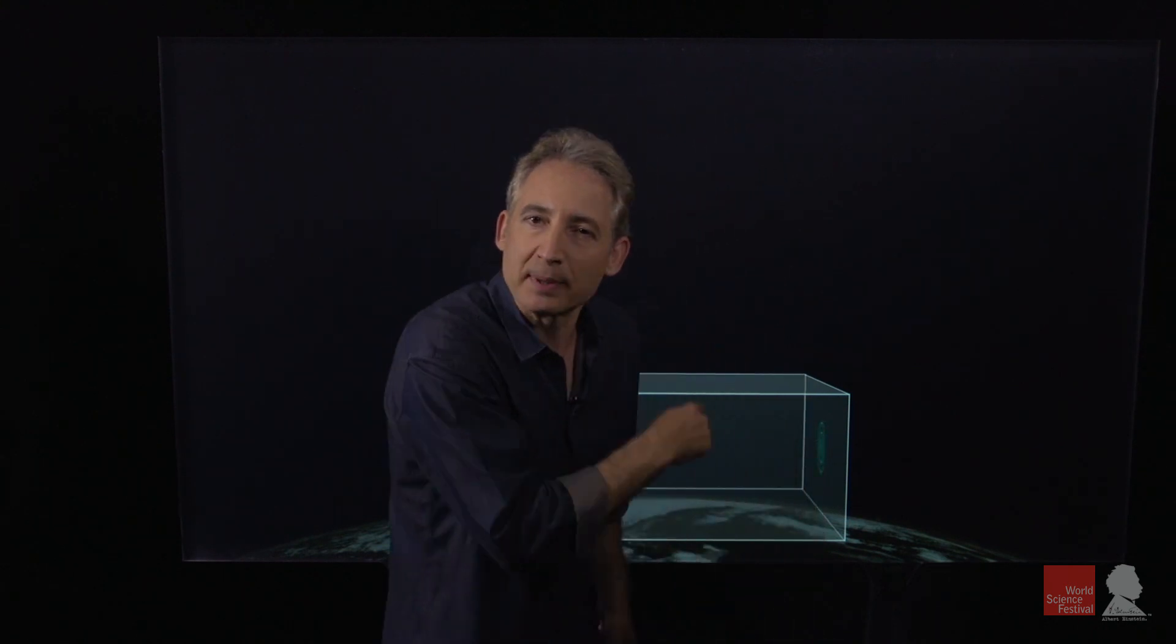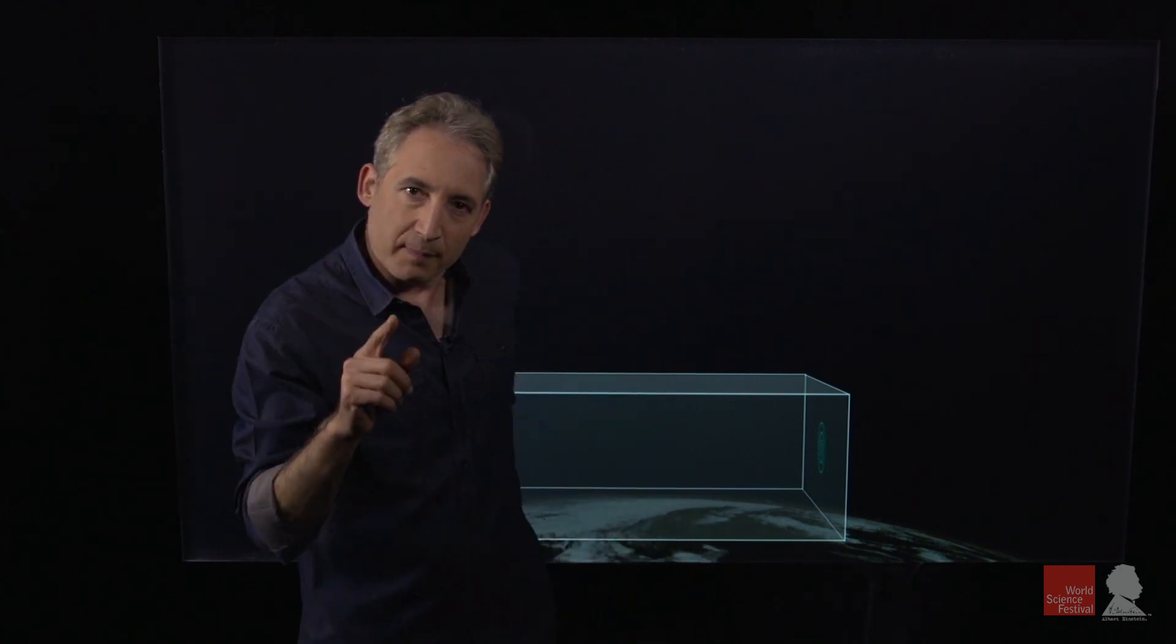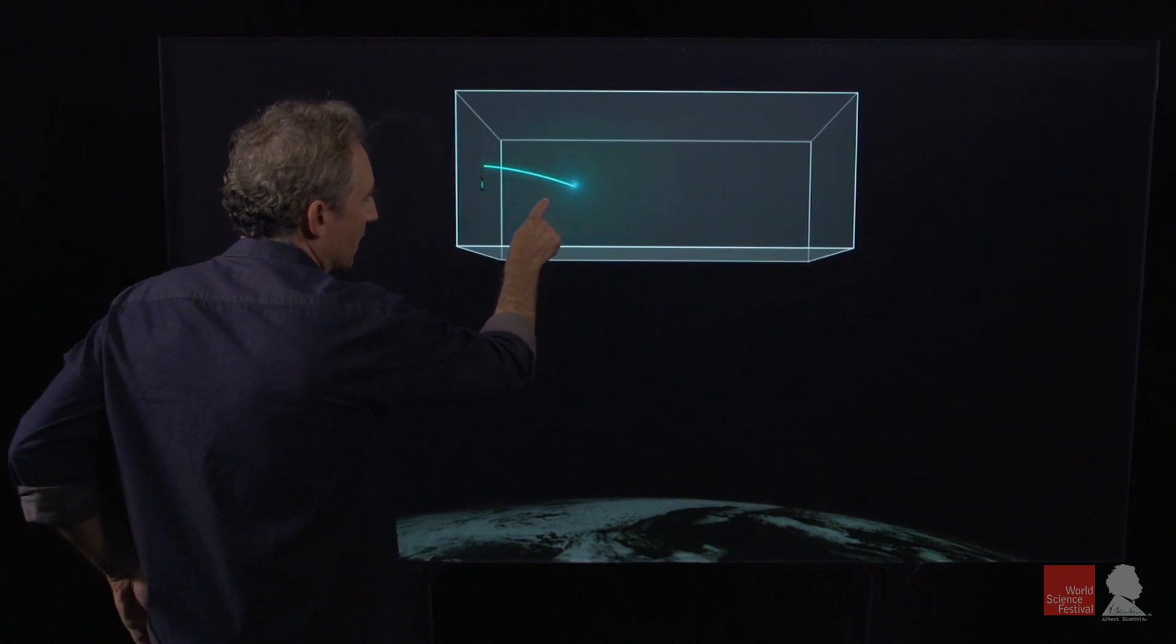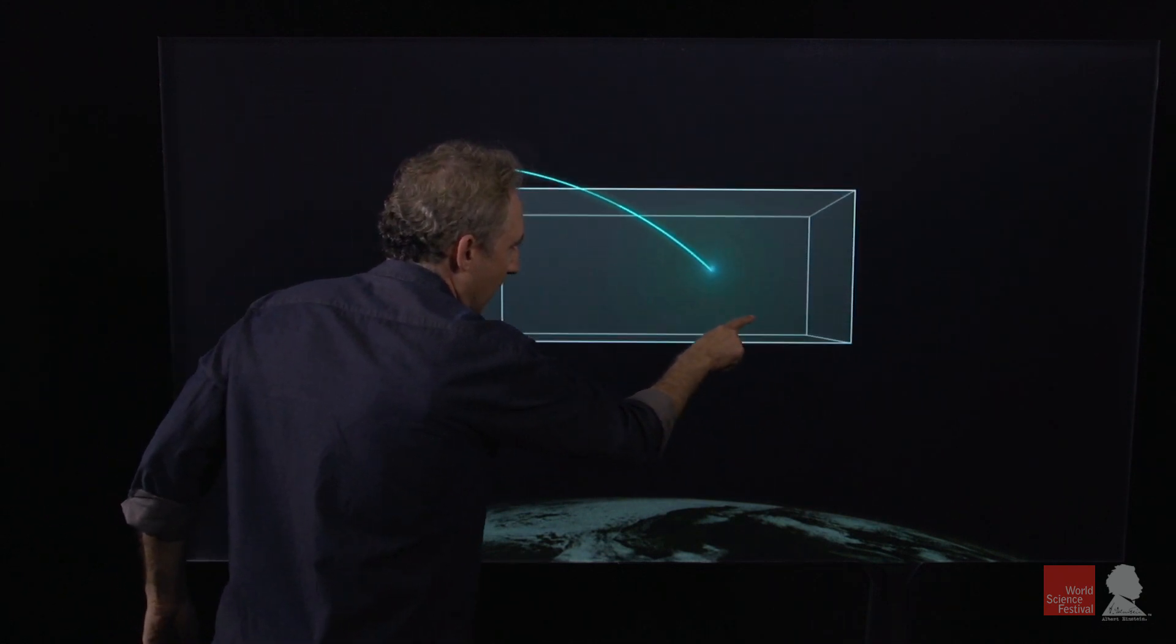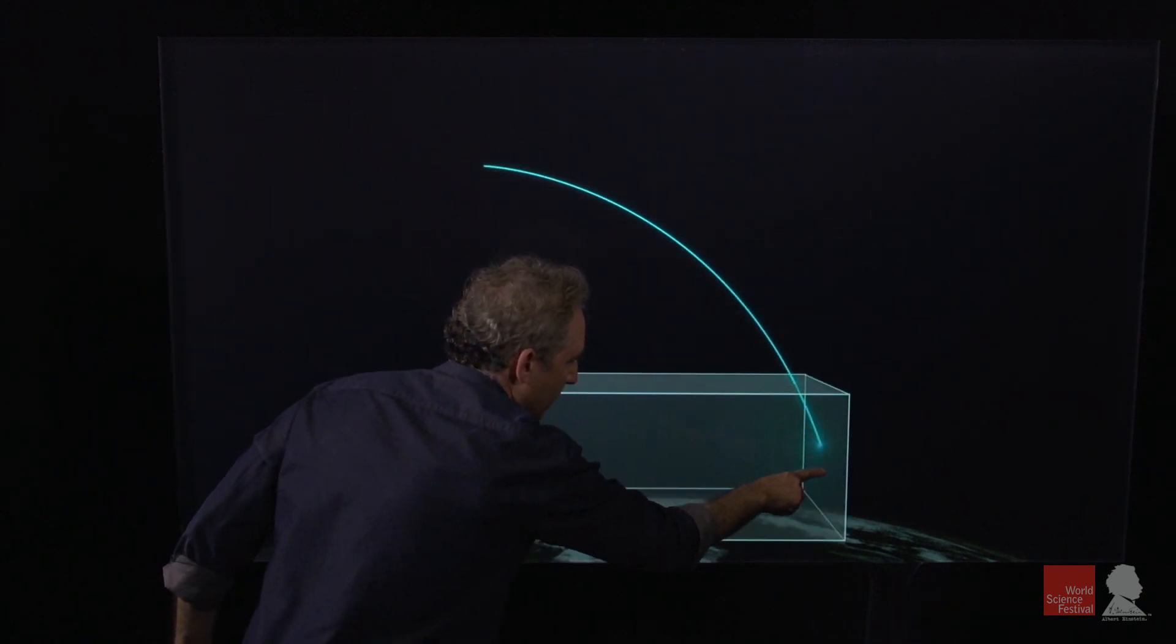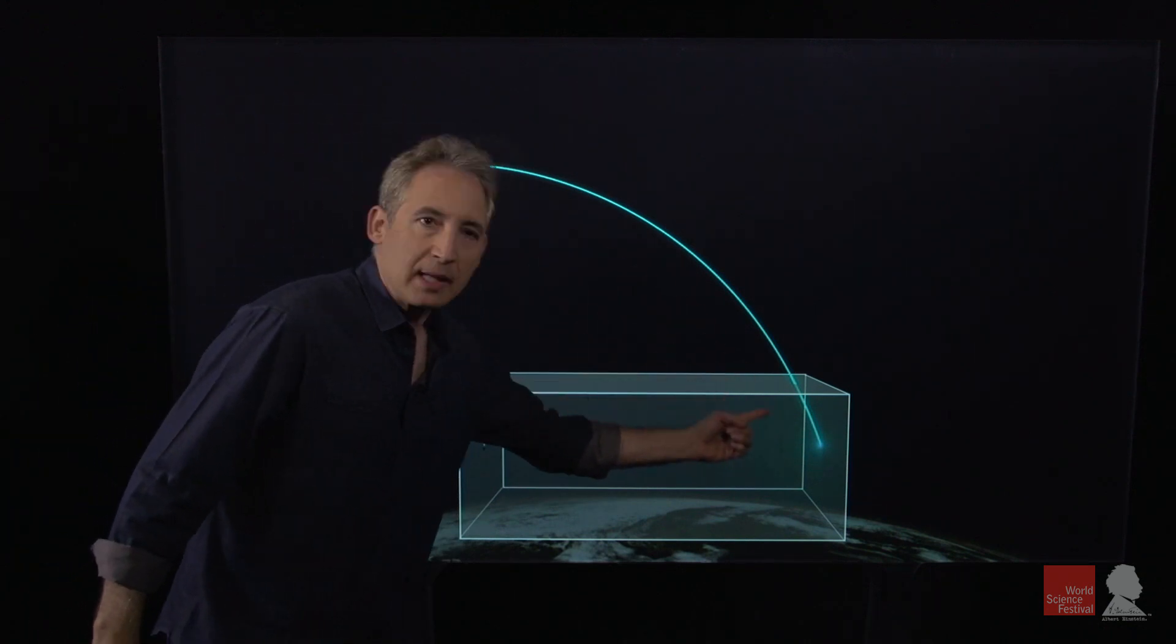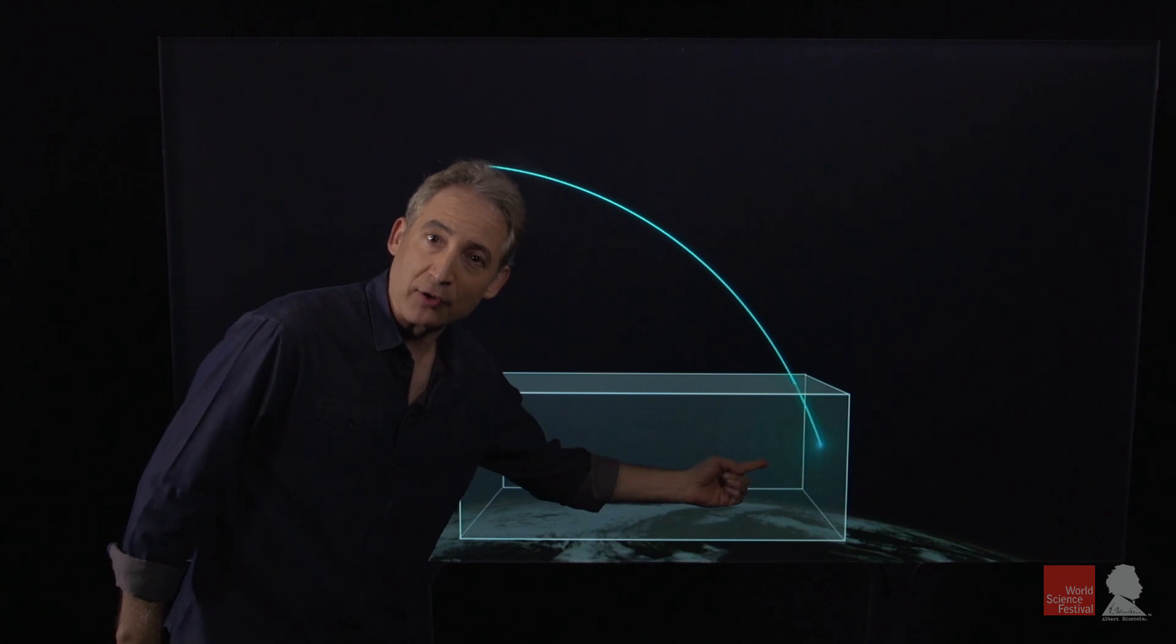But now the key question is how will this appear to somebody on the surface of the earth watching the box fall? Well from their perspective the laser light starts over here and ends at this location on the other side which means that the trajectory of the light is not straight. It's curved.